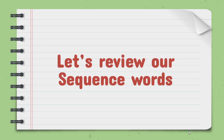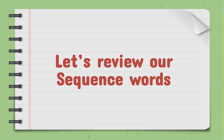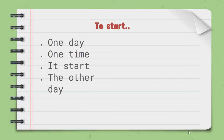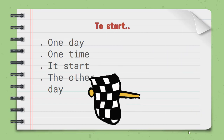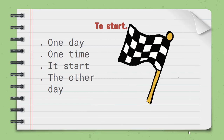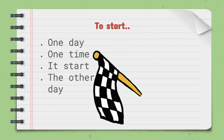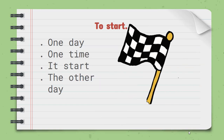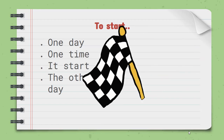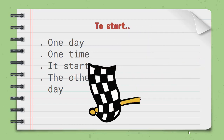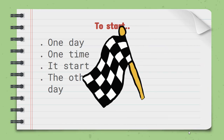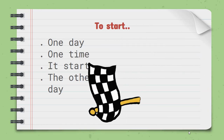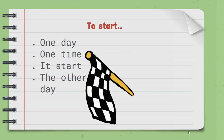Let's make a review of sequence words. Sequence words — palabras que podemos utilizar para start telling a story. To start, we can use: 'one day,' 'one time,' 'it started with,' or 'the other day.' These expressions we can use them to start — estas expresiones las podemos utilizar para comenzar.